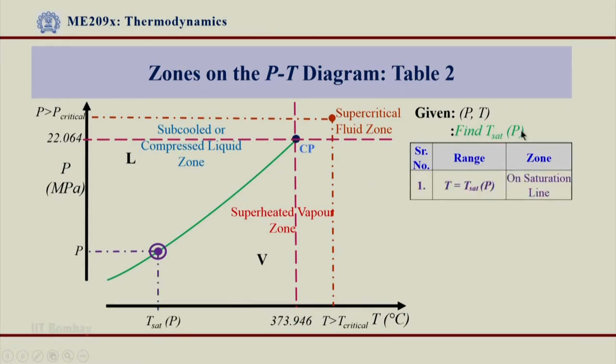Find T_sat(P) and the first case again, if this T happens to be T_sat(P), the given T value is equal to T_sat(P), if that is possible, then I know that our system lies on a saturation line. As was the case with table 1, when the pressure was equal to P_sat(T), here the first case is referring to temperature is equal to T_sat(P).